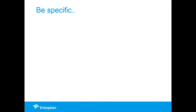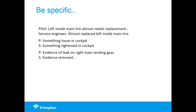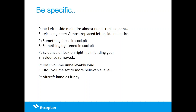Being specific matters. When we are vague, our end users respond in kind. Classic examples from pilot-engineer communication: 'Left inside main tire almost needs replacement' — 'Almost replaced left inside main tire.' 'Something loose in cockpit' — 'Tightened something in cockpit.' 'Evidence of leak on right main landing gear' — 'Removed evidence.' 'DME volume unbelievably loud' — 'DME volume set to a more believable level.' And my favorite: 'Aircraft handles funny' — 'Aircraft warned to straighten up, fly right, and be serious.'